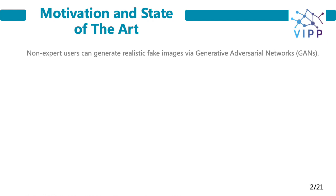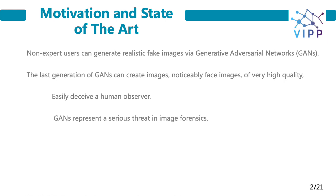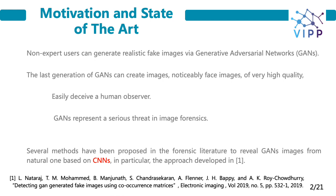With the presence of advancement in deep neural networks and generative adversarial networks — GANs — non-expert users can generate realistic fake images. The last generation of GAN architecture can create images, notably face images, of very high quality that can easily deceive a human observer. Therefore, GANs represent a serious threat for the development of image forensic techniques capable of distinguishing between real and GAN-generated images.